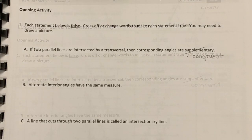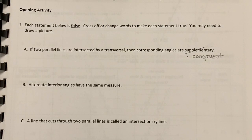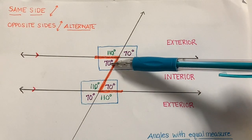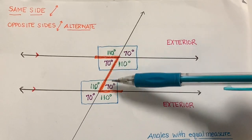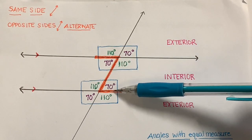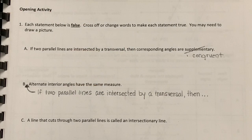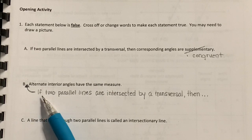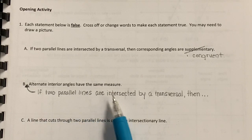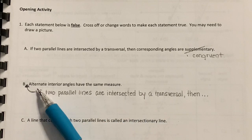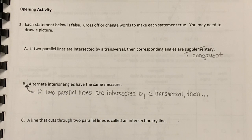Okay, the next one says alternate interior angles have the same measure. So looking at our reference card, these are examples of alternate interior angles, and they do have the same measure. So what's wrong with this statement? What needs to be added in front of this statement is this statement: If two parallel lines are intersected by a transversal, then alternate interior angles have the same measure.